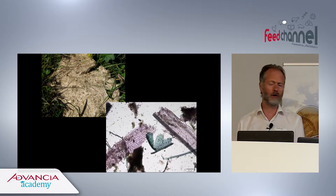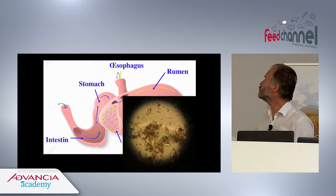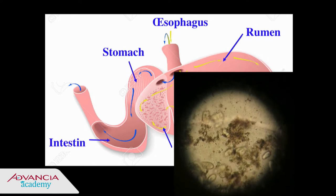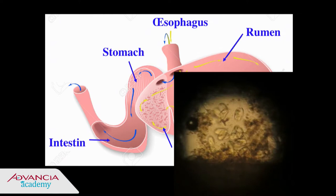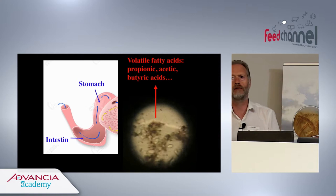Most of you know that this animal has a rumen — a big outgrowth of the part of the stomach connected to the esophagus, a big pouch filled with water, something like 100 to 250 liters of water and all the herbs that come in. Since this is protected from oxygen, there is here a huge number of bacterial and also protist cells developing — something like millions of billions of cells. This is producing a lot of wastes, mostly volatile fatty acids like propionic acid, acetic acid, and butyric acid, which are making the smell of the cow.